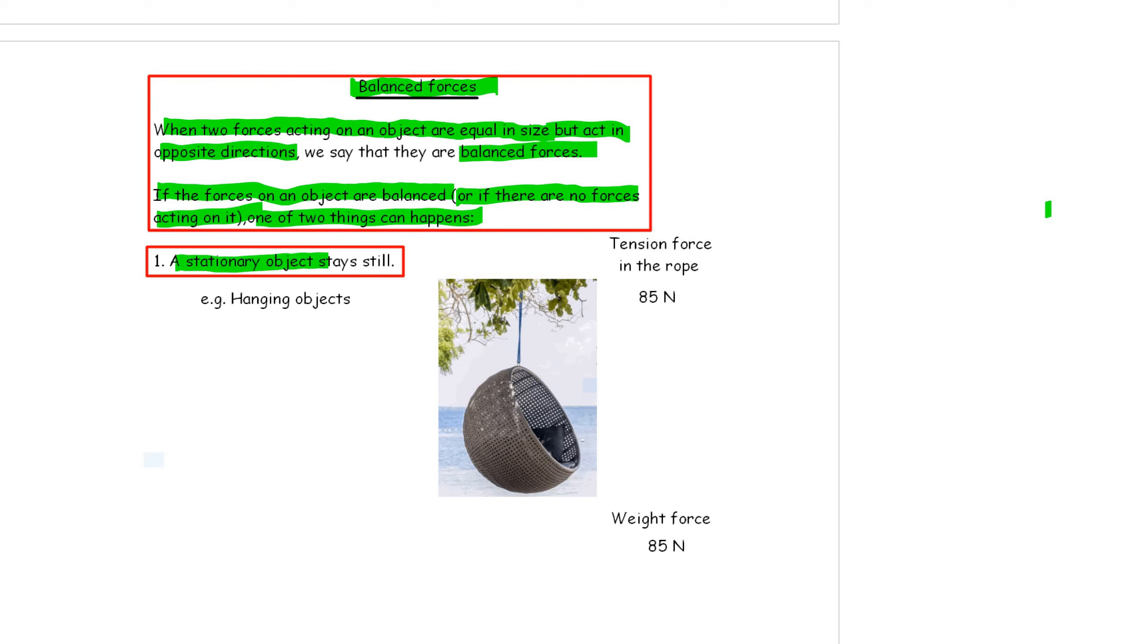A stationary object will stay still. For example, hanging objects. And you can see a seat here. The weight force, which is 85 newtons, is balanced by a tension force in the rope of an equal but in an opposite direction force.